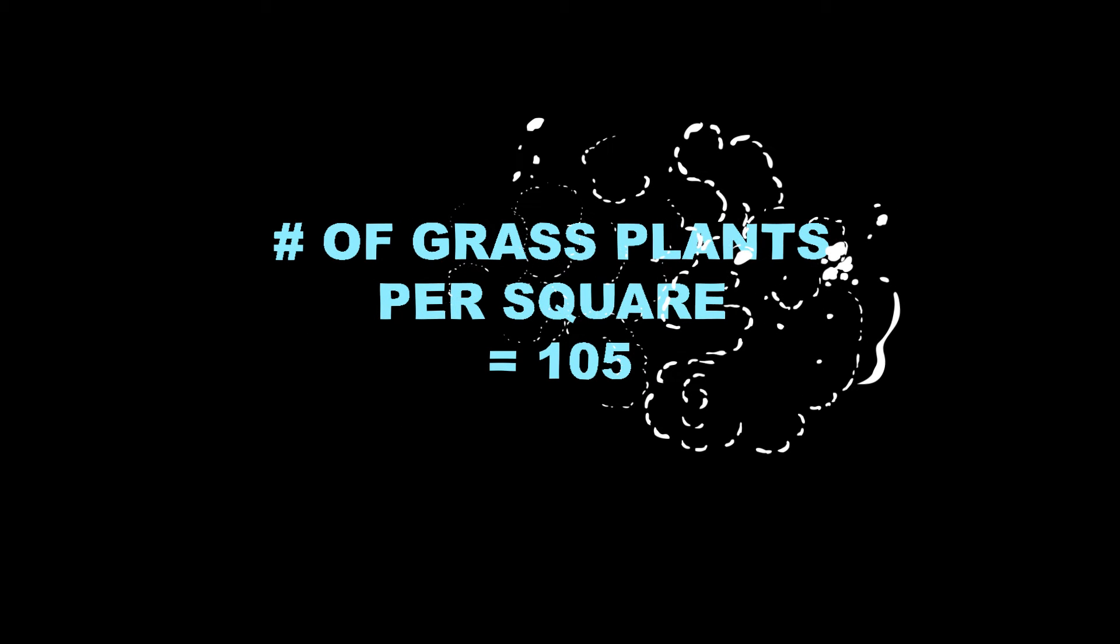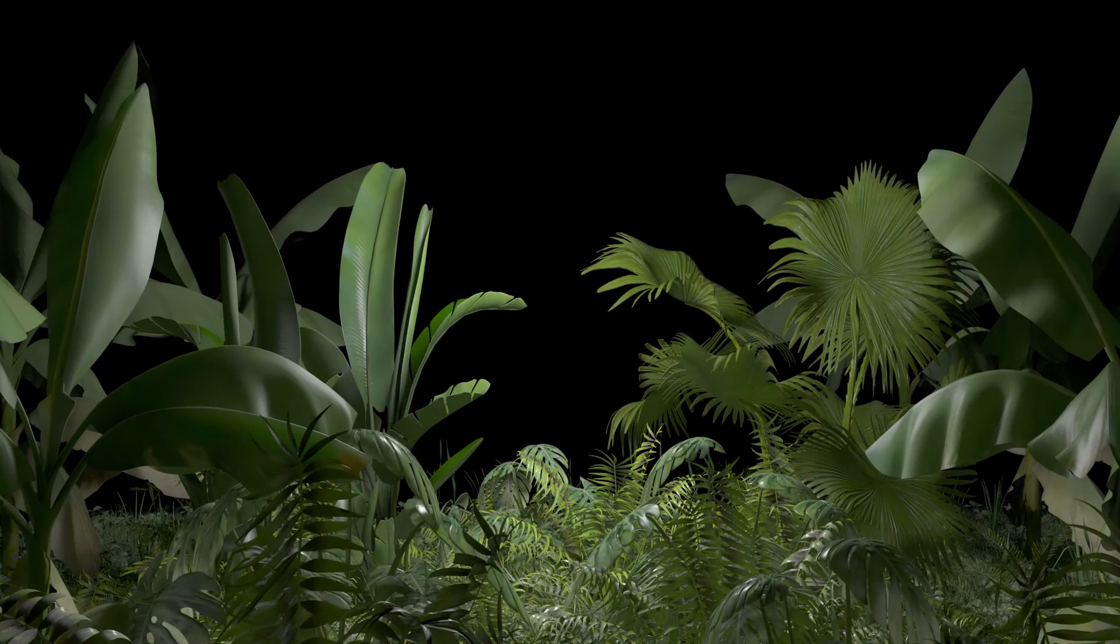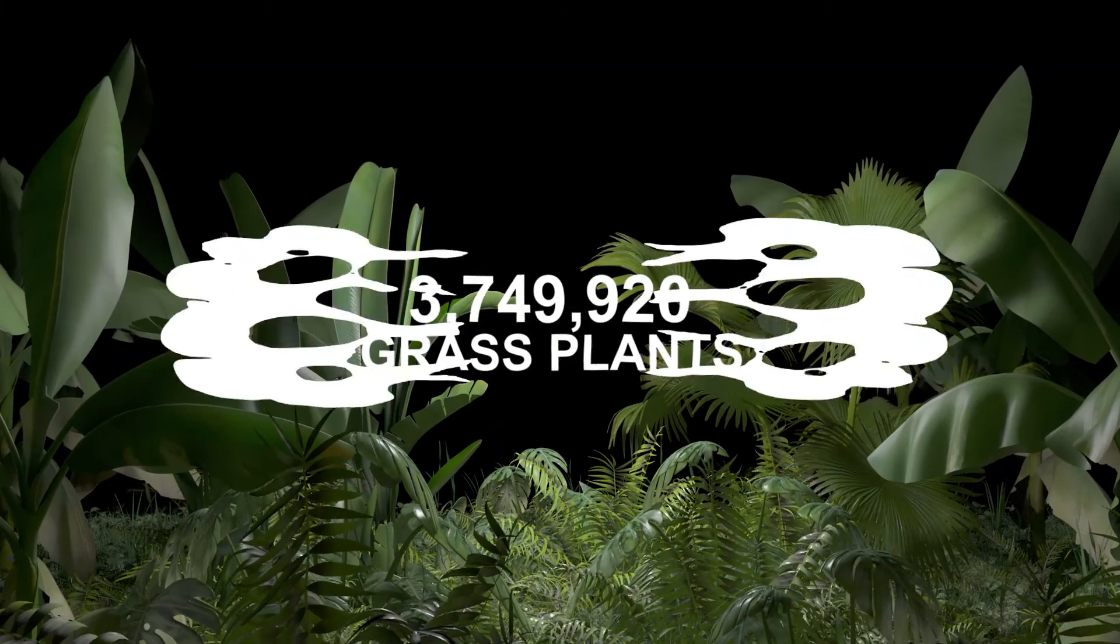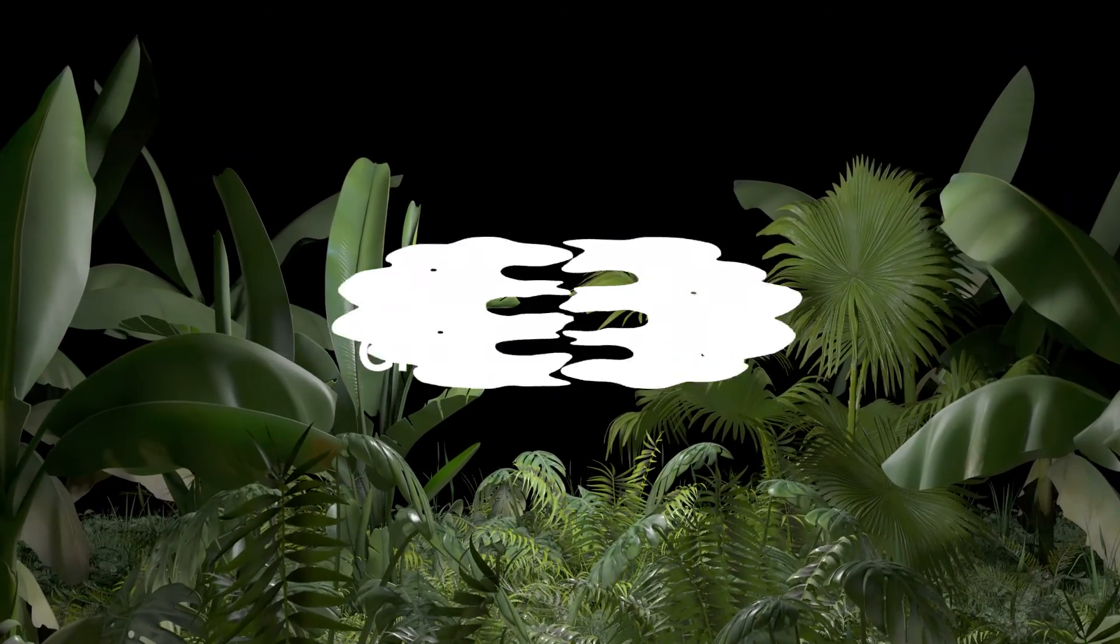If you did correctly, you should have gotten 35,714 multiplied by 105, which equals 3,749,970 grass plants.